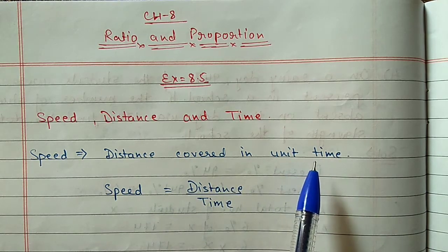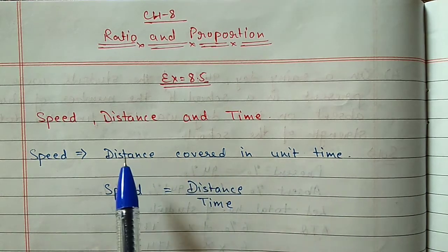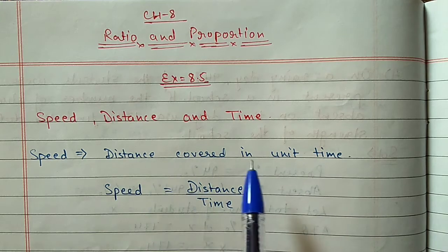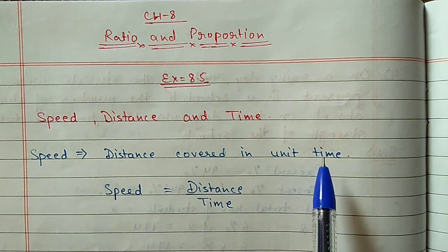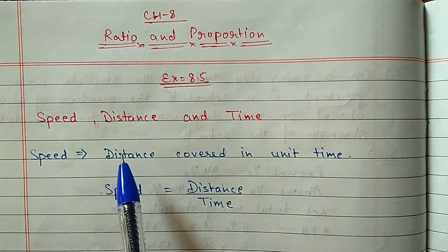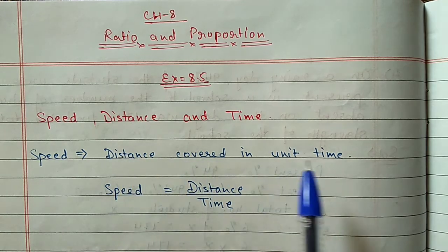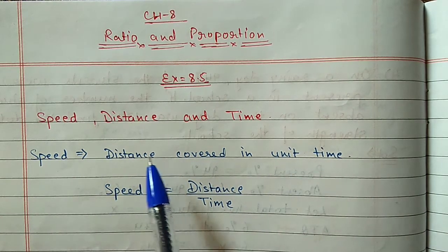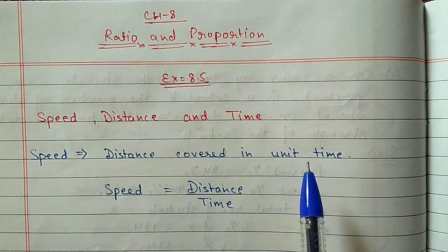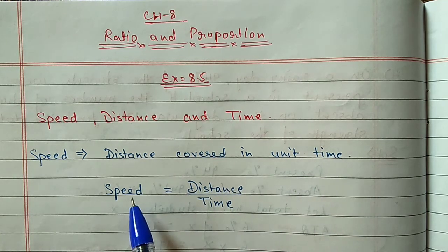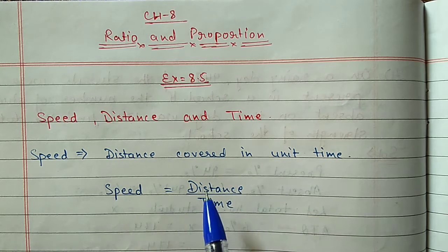Here, distance we will measure in kilometer or meter, and parallely time we will measure in hour or second. If distance is in kilometer then time we will take in hour, and if distance is in meter, time we will take in second.